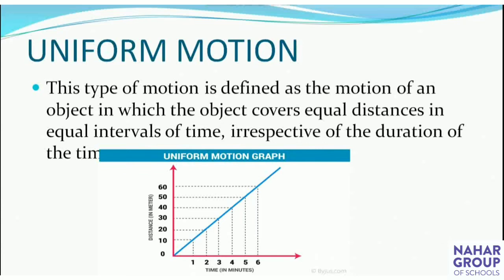In this graph, the x-axis shows time in minutes and the y-axis shows distance in meters. The object covers 10 meters in one minute, another 10 meters in the next minute, and so on — covering 60 meters in 6 minutes total. The distance is directly proportional to time, so the graph of uniform motion will always be a straight line.